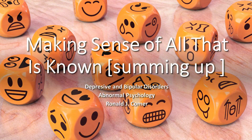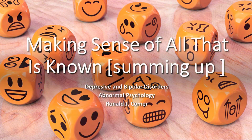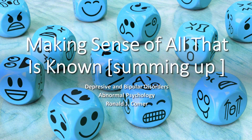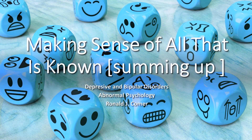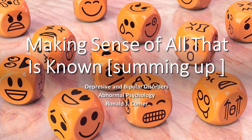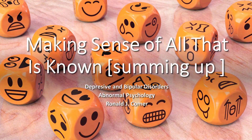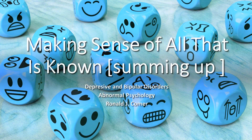Peter Lewinson and his colleagues (1988) assessed more than 500 non-depressed persons on the various factors linked to depression, then assessed the participants again eight months later to see who had become depressed and which factors had predicted it. Negative thinking, self-dissatisfaction, and life stress were found to precede and predict depression. Poor social relationships and reductions in positive rewards did not. The researchers concluded that the former factors help cause unipolar depression, while the latter simply accompany or result from depression and perhaps help maintain it.